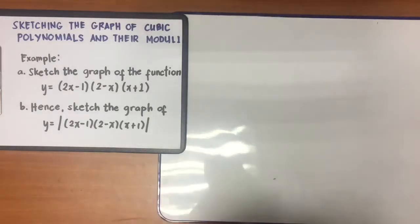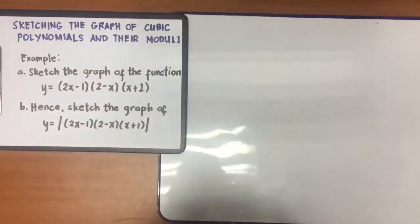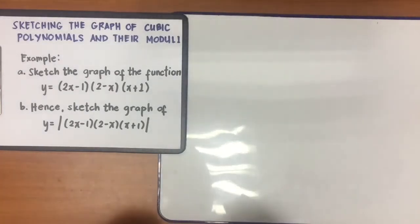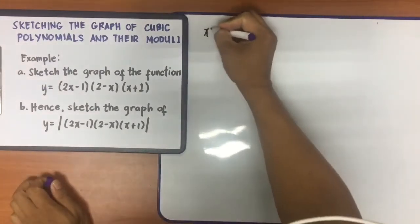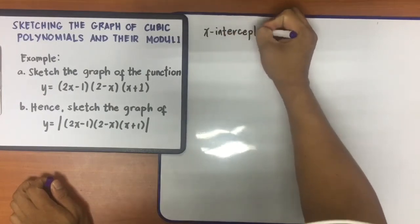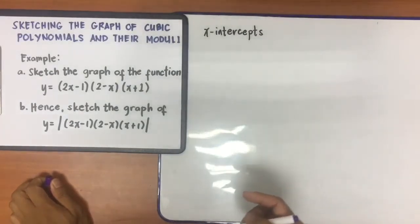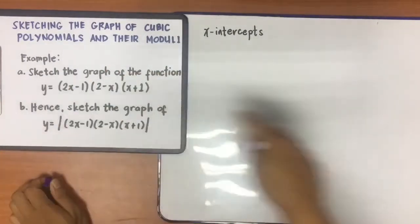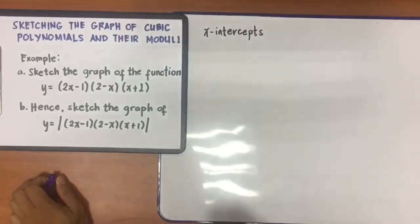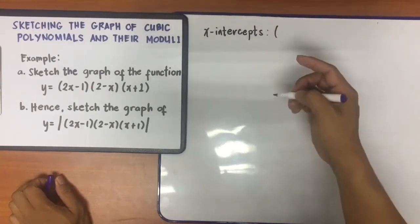The first thing you need to know in sketching the graph of a cubic polynomial is you need to find the x-intercepts and the y-intercepts. x-intercepts and y-intercepts are points — x-intercepts are points on the x-axis and y-intercepts are points on the y-axis, and they are usually written as ordered pairs.